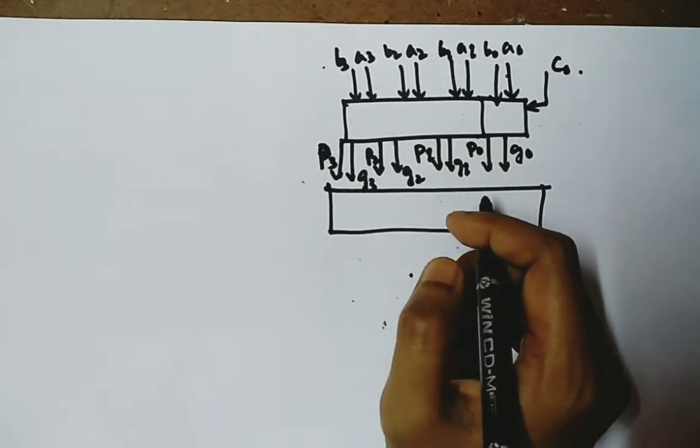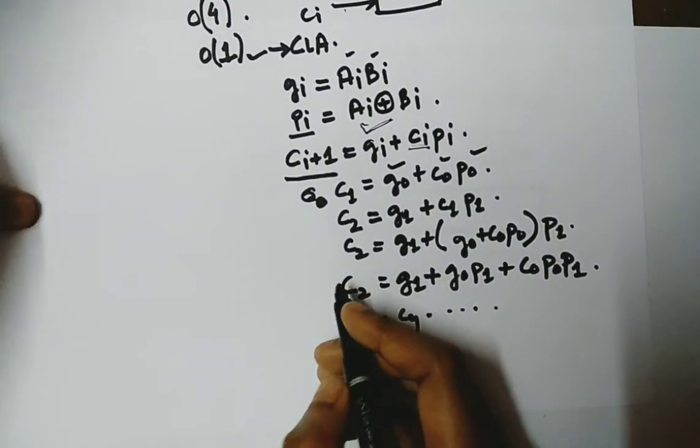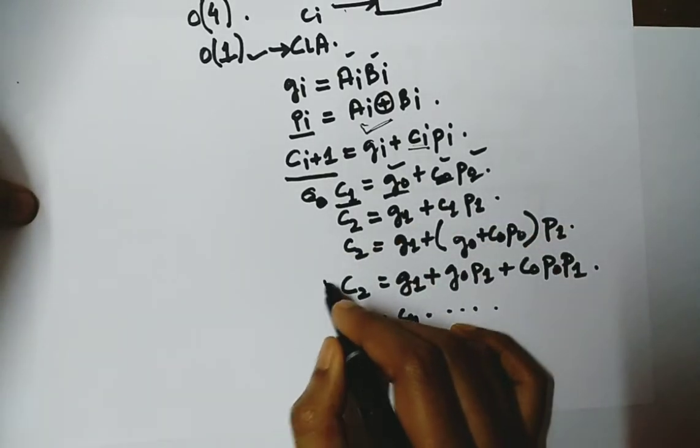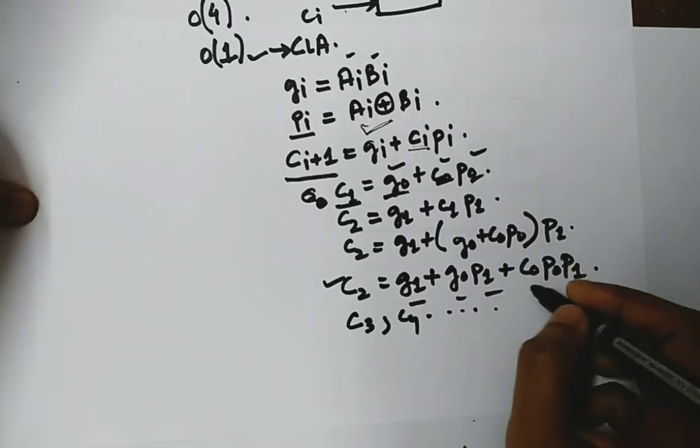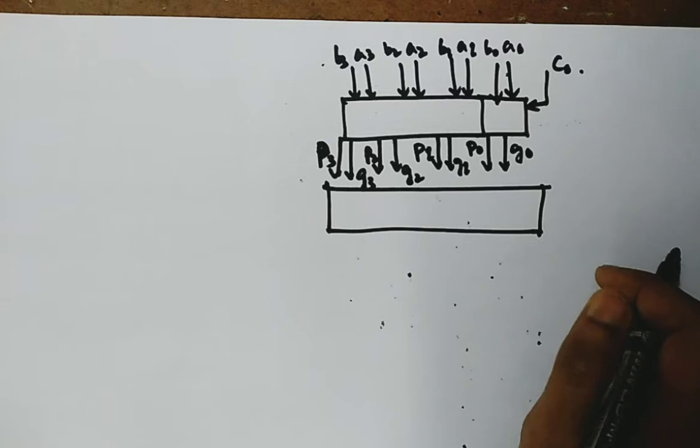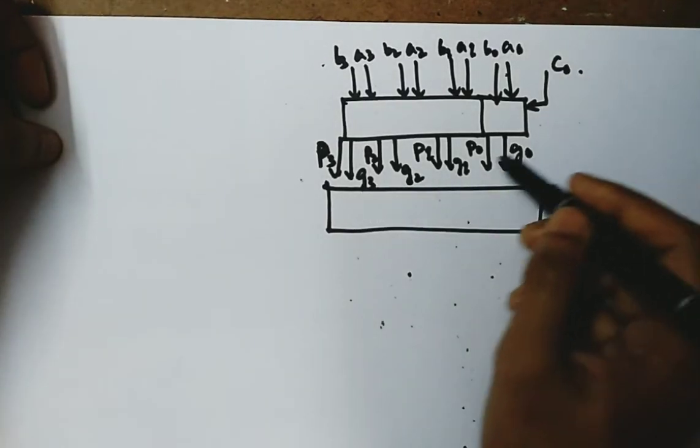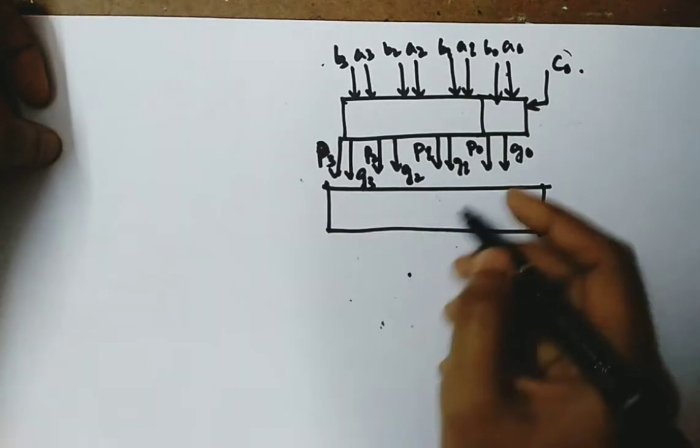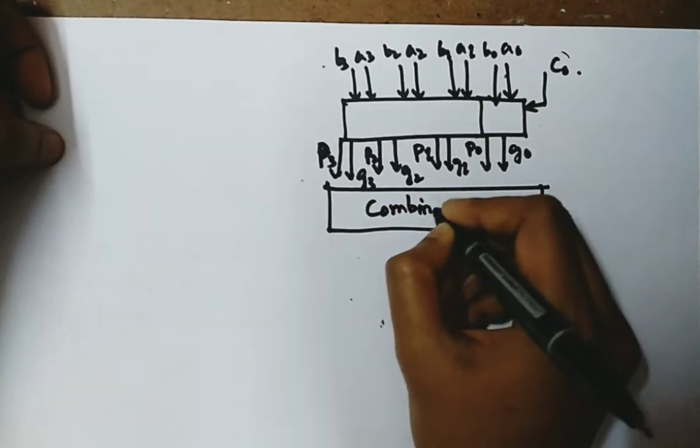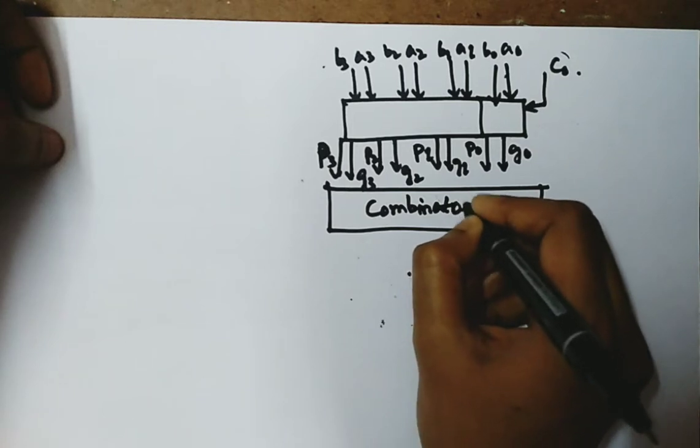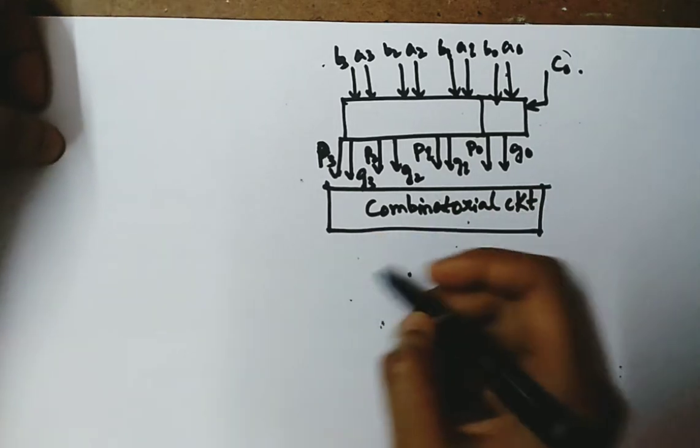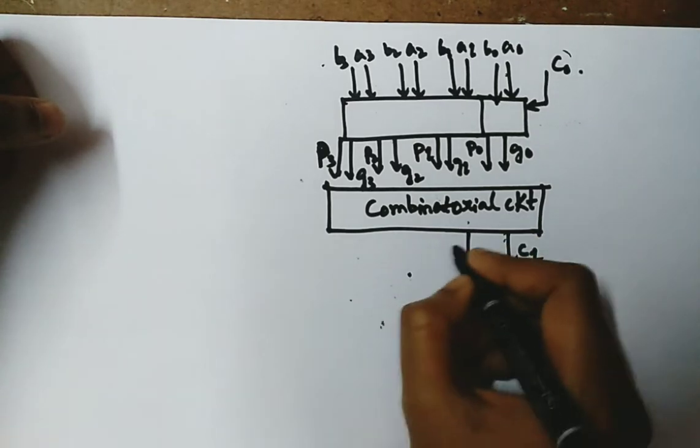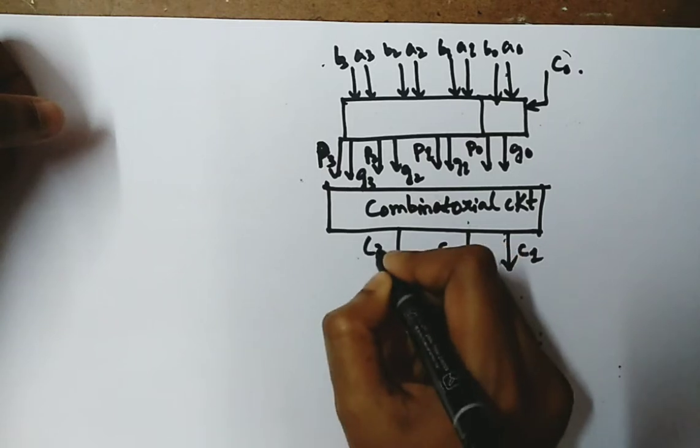Now we see that C1 is a combination of G0, C0, and P0. C2 is a combination of G1, G0, P1, and C0, P0, and P1. So basically all the carries are combinations of this C0, G0, P0, that is C0 and GiPis. So here we can give AND and OR gates, and from there we can generate these C1, C2, C3, and C4.